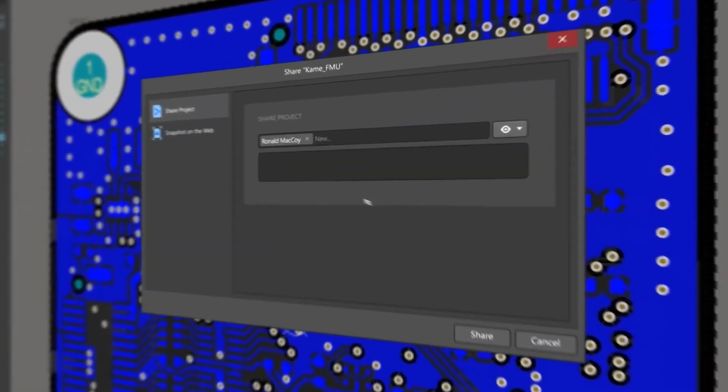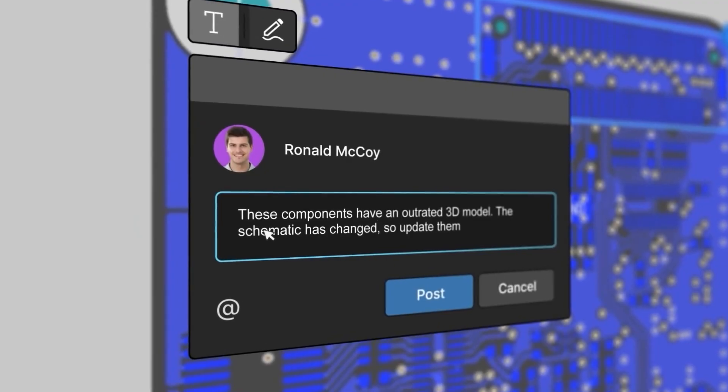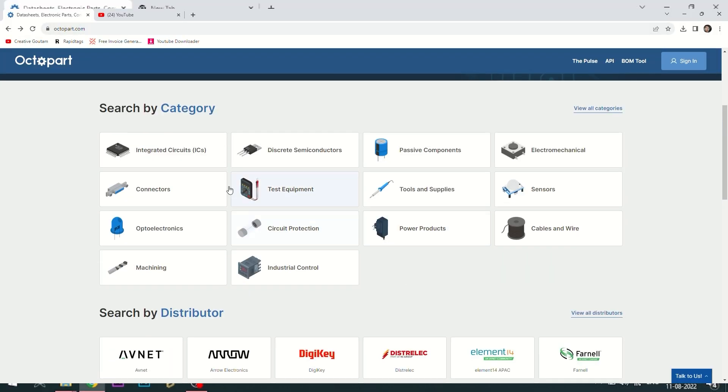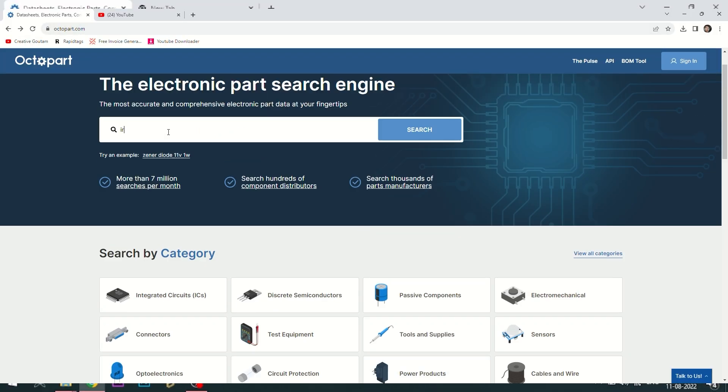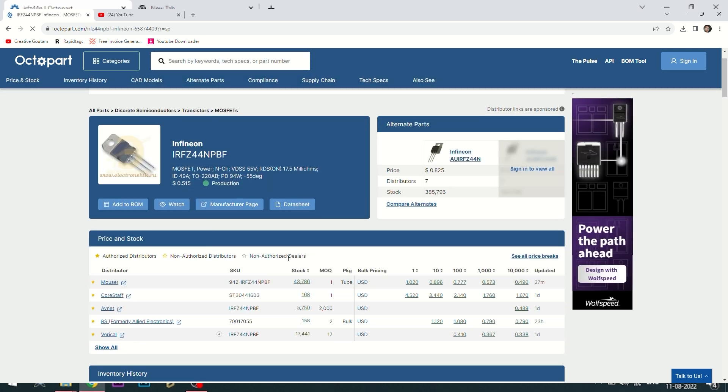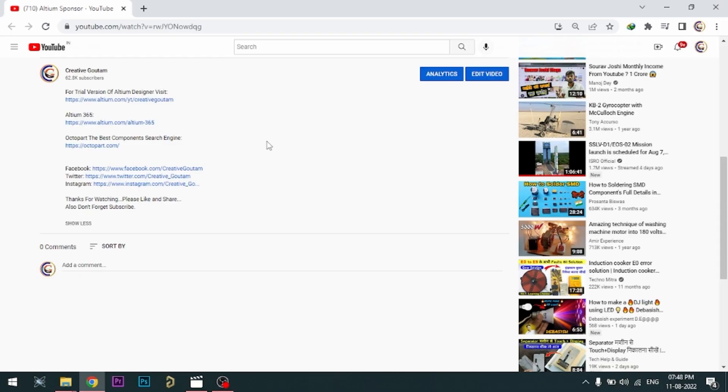With Altium 365, you can share your designs on the web and get feedback to your designs. Visit octopart.com for best electronic component search engine by Altium. Octopart gives you the most up-to-date data like specifications, data sheets, CAD models, etc. All the links are provided in the description.